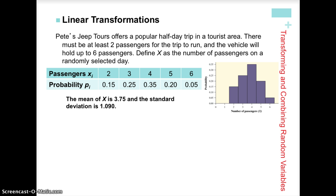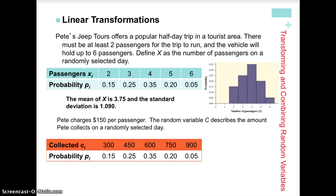We can calculate the mean and standard deviation as we learned in Section 6.1. Now Pete charges $150 per passenger, so we're going to multiply each value of random variable X by $150, giving us a new random variable C. Random variable C has different values but the same probabilities. When you graph it, the shape is exactly the same for C as it is for X — the shape is the same but the horizontal axis is different.